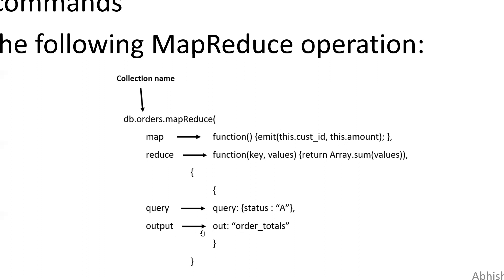The output parameter is a compulsory statement. We write 'out: orders_totals,' which means once the MapReduce function is performed, the results will be stored in a file named 'order_totals.' You can give any name to this file. That is the output specification in the MapReduce function.